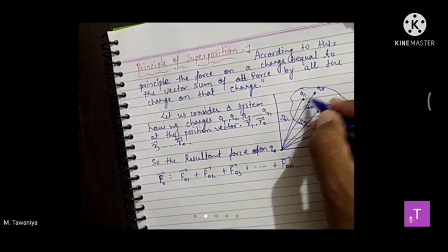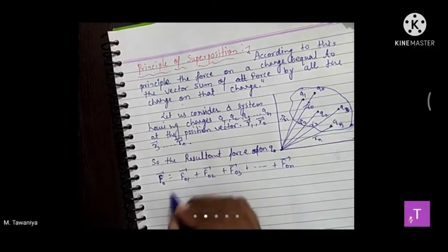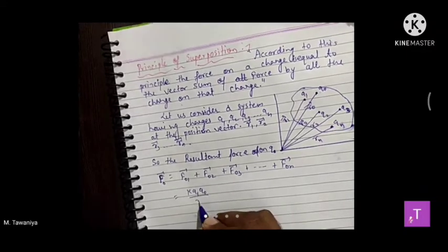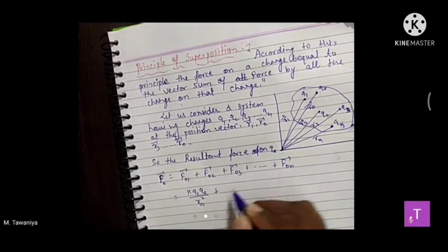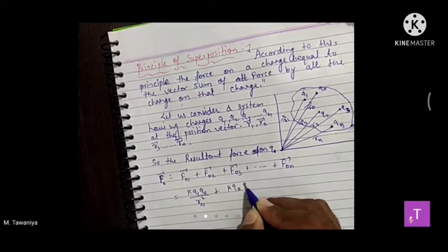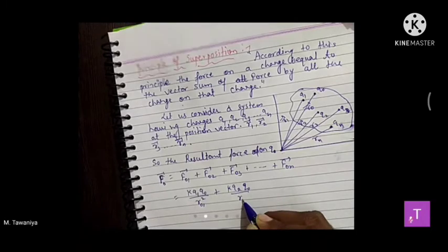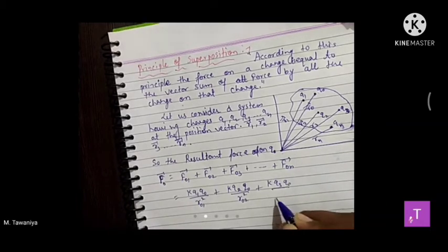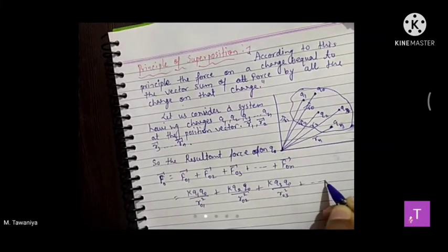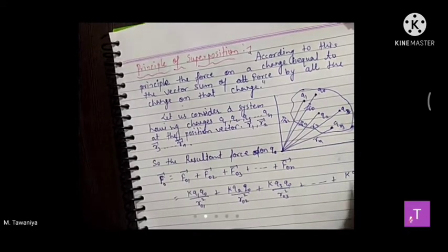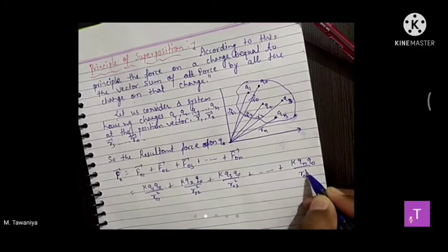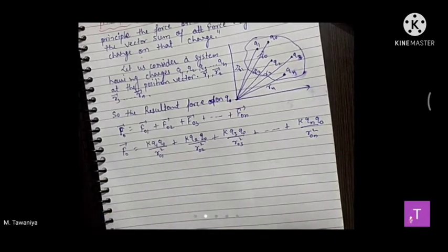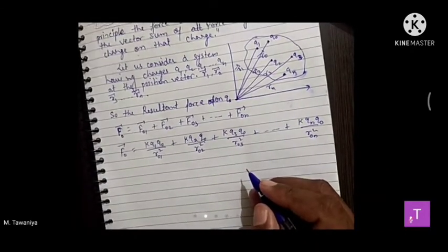F01 निकालना है — इन दोनों के बीच में force: k·q1·q0 / r01². इसके लिए: k·q2·q0 / r02² + k·q3·q0 / r03² + ... + k·qn·q0 / r0n²। यह हमारे पास F0 resultant force on q0 charge हो जाएगा।